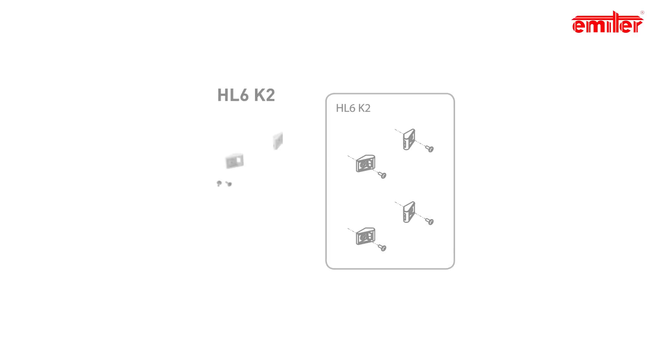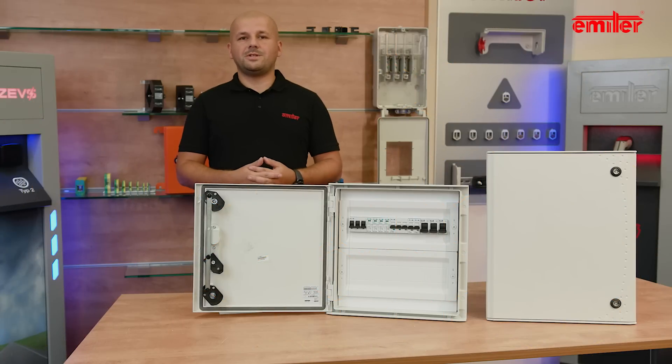For installers who want to use band and press tool, we recommend the HL6K2 set. The assembly of these brackets is so simple that it can be done directly on an installation site. Thank you for your attention and see you in the next episode, in which we will talk about ventilation, internal pressure compensation, and drainage elements.